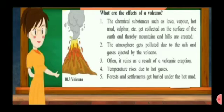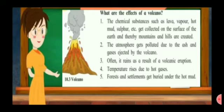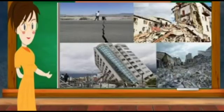Volcanoes also erupt in the sea. The same substances that come out during the eruption of a volcano on land are ejected during the eruption of a volcano in the sea. Some islands are created due to the eruption of volcanoes in the sea. It is not possible to prevent the eruption of a volcano, to stop it after it erupts, or to control it. However, by means of science and technology, it is possible to predict an eruption and to take immediate steps for disaster management.